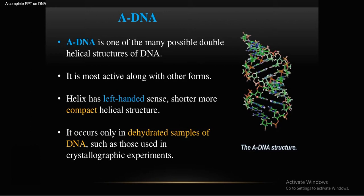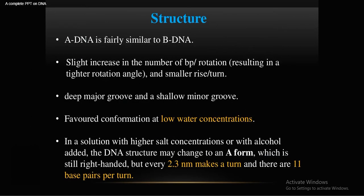A-DNA occurs in dehydrated samples of DNA, such as those used in crystallography experiments like Franklin's experiment. The structure of A-DNA is fairly similar to B-DNA, with a slightly increased number of base pairs per rotation, smaller rise, deep major groove, and shallow minor groove.